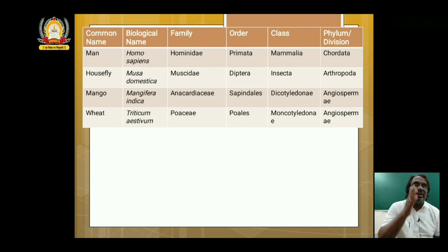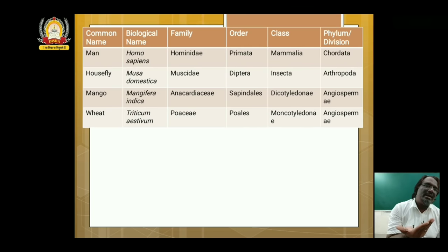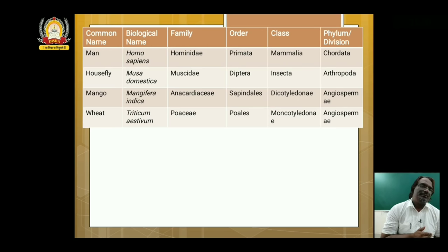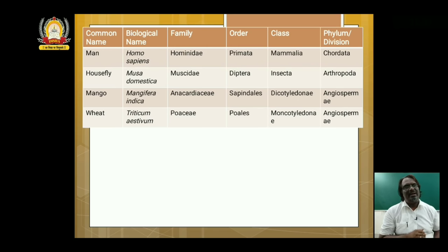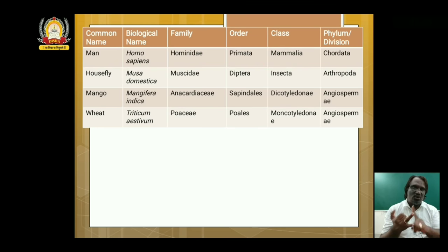Look at the family: human beings belong to Hominidae, order Primates, class Mammalia, phylum Chordata, kingdom Animalia. In the same way, the remaining three — housefly, mango and wheat — all four examples of man, housefly, mango and wheat — this chart you have to write.